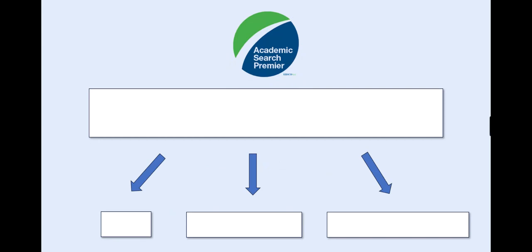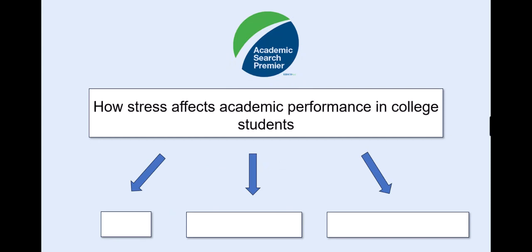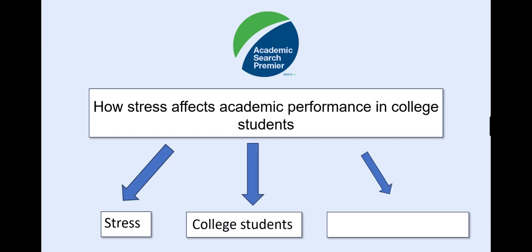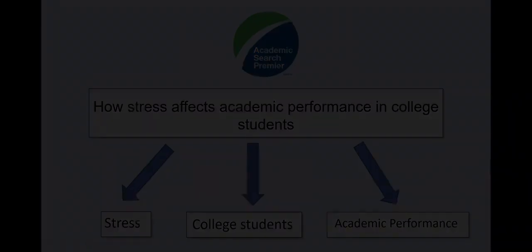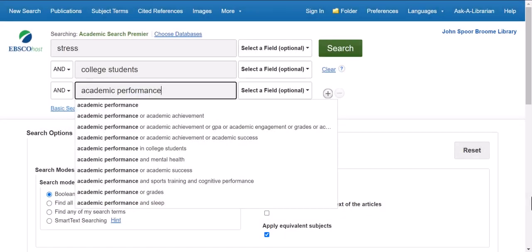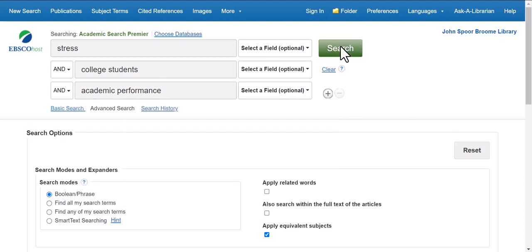So if your topic is 'how stress affects academic performance in college students,' instead of searching that full sentence, you'll break it down into pieces like stress, college students, and academic performance. Then enter each of those terms into a search box. The search box will suggest additional terms and it may be helpful to add some of these to your search.